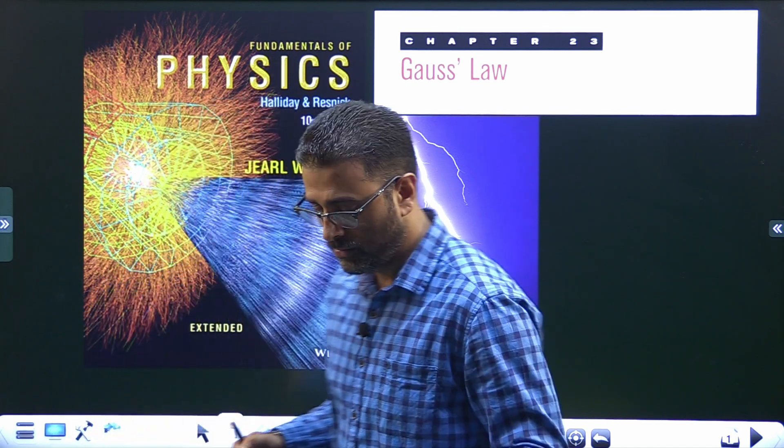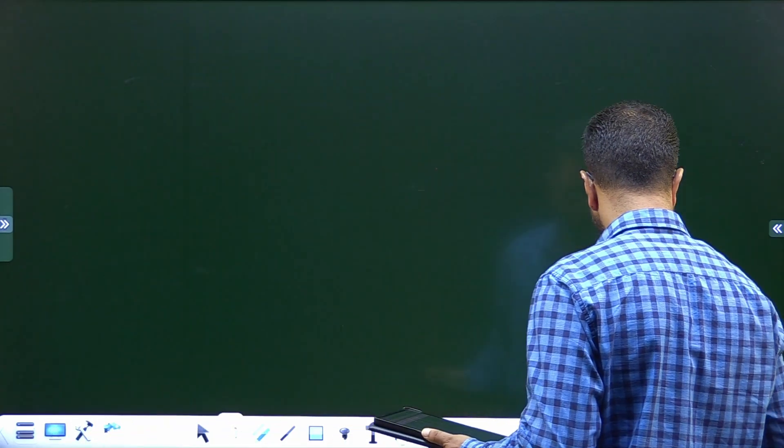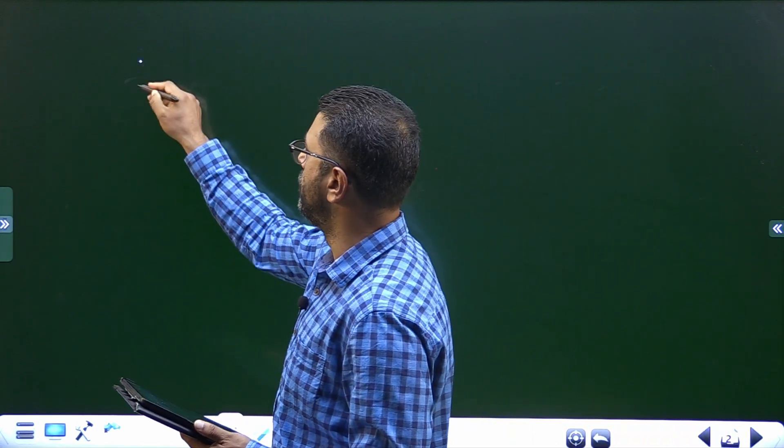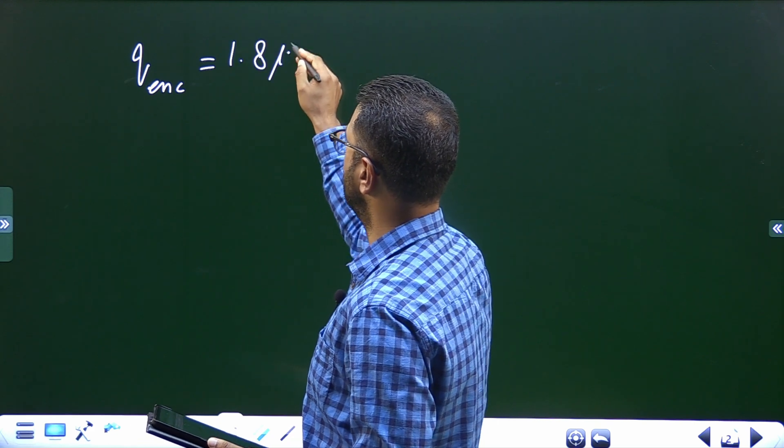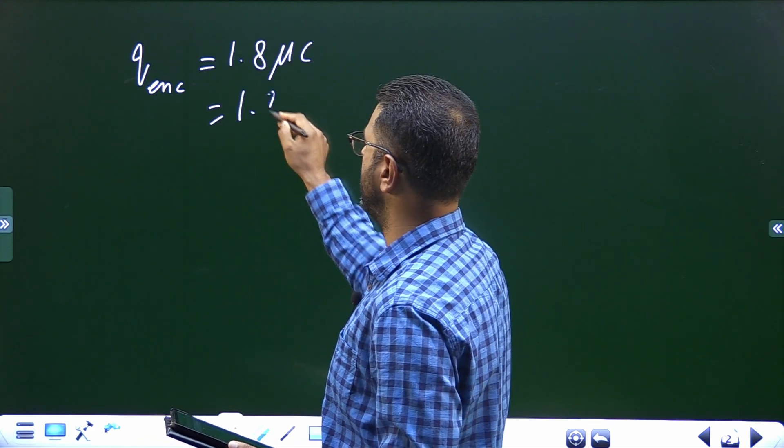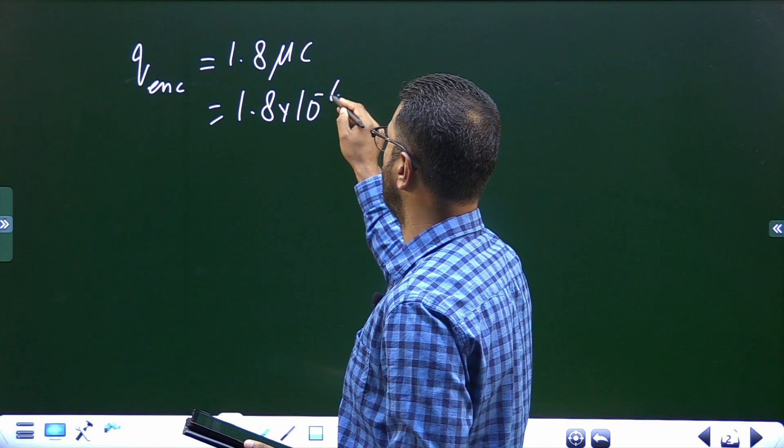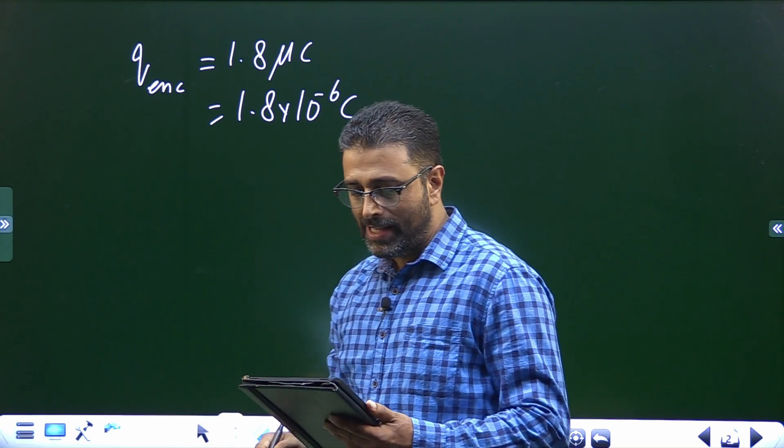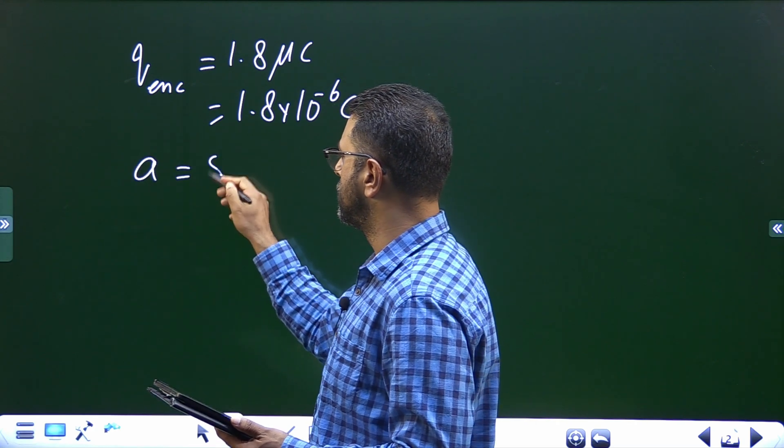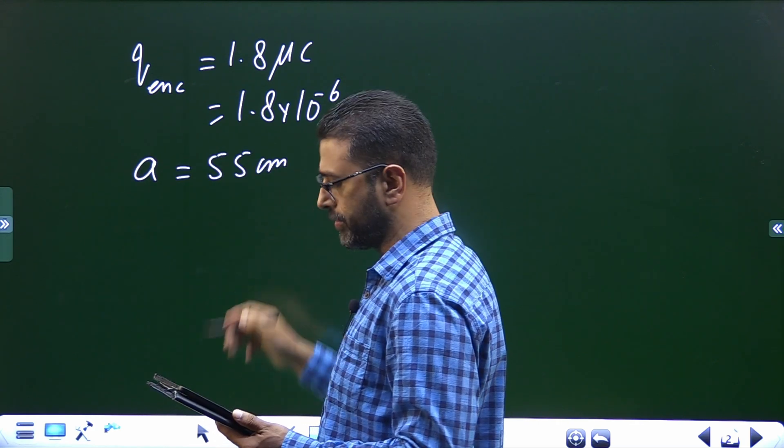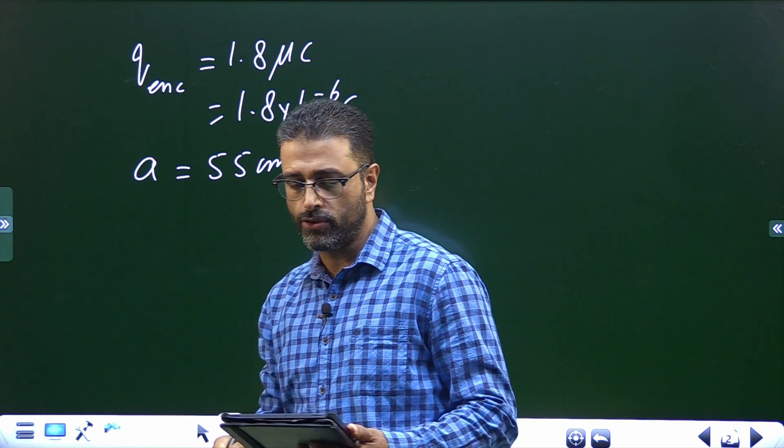Okay, so we have a Gaussian cube with charge enclosed by it. Q enclosed is equal to 1.8 micro coulomb, which is 1.8 into 10 to the power minus 6 coulomb. Then side of the cube is 55 centimeters, so side a is 55 centimeters. We have to find out net flux through this cube.